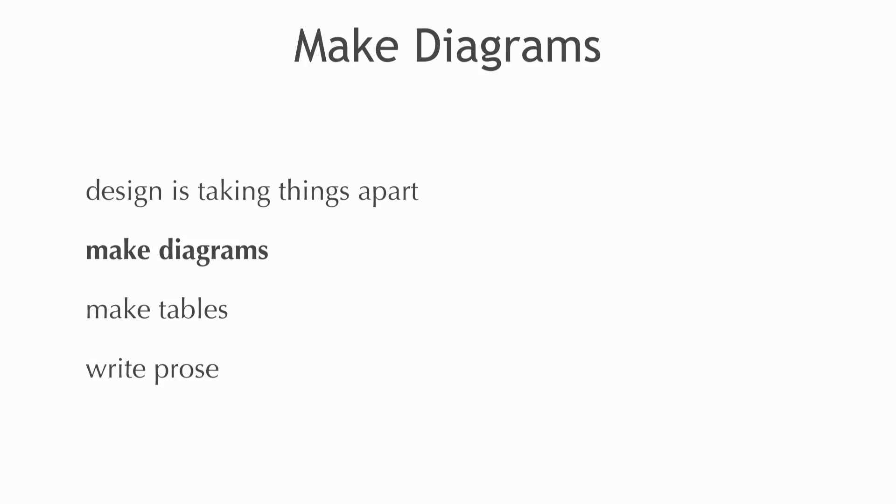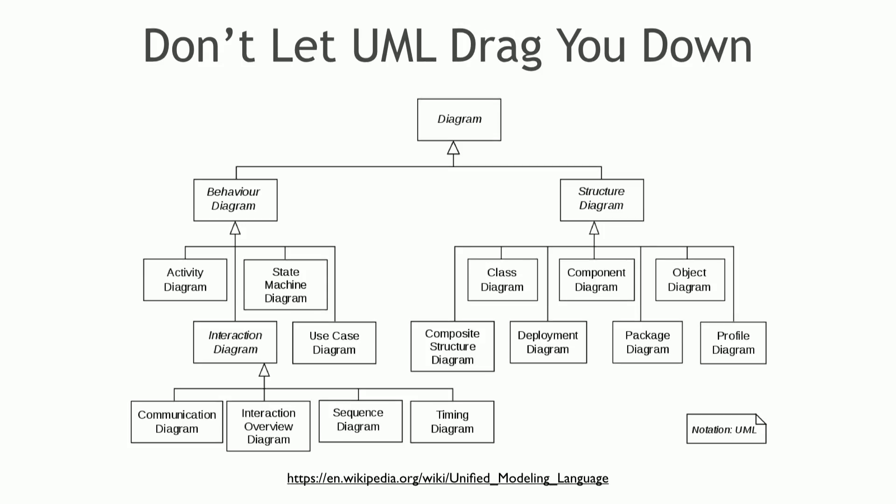The first one is make diagrams. Diagrams got a bad name because of UML, and UML has a lot of problems. This is the sort of class hierarchy for UML — you see behavior diagrams on one side and structure diagrams on another, and inside behavior diagrams you could have use cases or timing or what have you. The problem with this siloing is it's like static typing for diagrams.